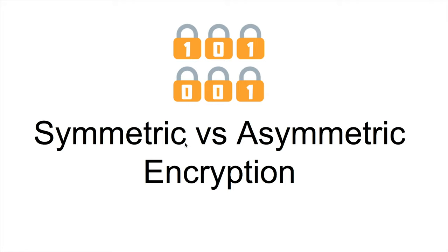Encryption is the process of scrambling data to protect personal files, secure communication, hide identities, and much more. In this video we will learn about the different types of encryption — symmetric encryption and asymmetric encryption — where they are used, what they are used for, and the pros and cons of each one.